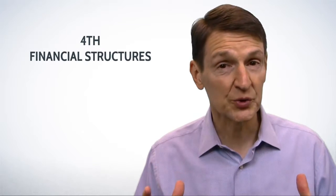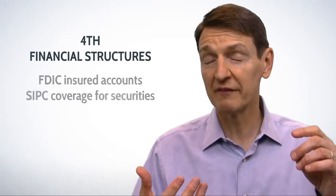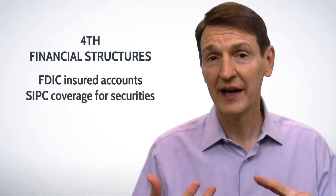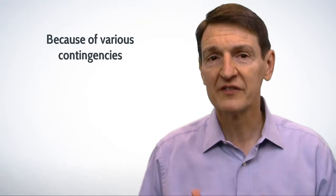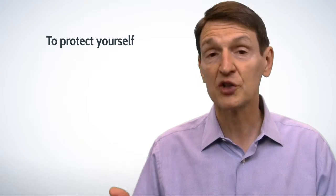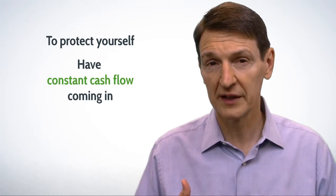Next, financial structures. Here we're talking about making sure you have FDIC insured accounts, SPIC coverage for securities, maybe other kinds of insured assets. Why? Because of various contingencies of things that might happen to you during your life that you have places to go to, and it's structured properly for a variety of different kinds of things that might occur to protect yourself, to make sure you have constant cash flow coming in.